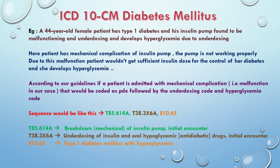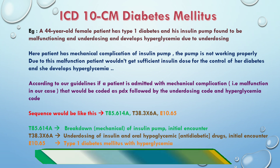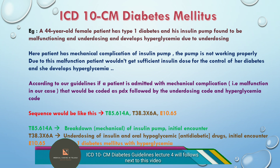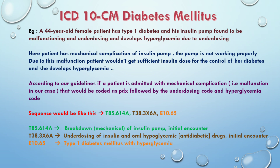She develops hyperglycemia. According to our coding guidelines, if the patient is admitted with a mechanical complication — that is, a malfunctioning insulin pump in our case — that mechanical complication would be coded as the primary diagnosis. The sequencing is: T85.614A, T38.3X6A, E10.65.